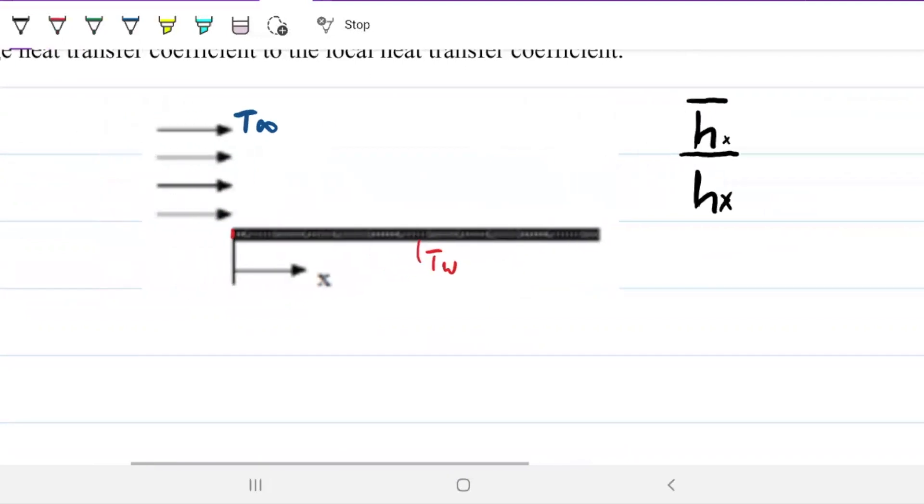In other words, if I take this whole plate here, calculate the coefficient for all of this, and divide it by the whole length of this plate, I'm going to have an average coefficient. And for each of these points here, I'll have a different coefficient. My question is, what is one over the other? What is the relationship between the two?